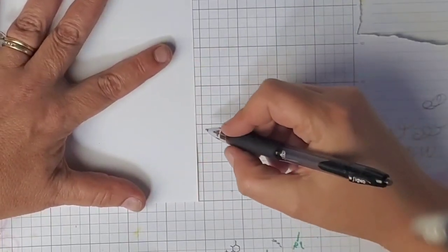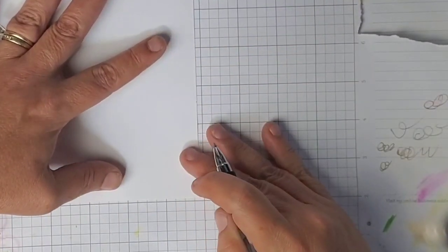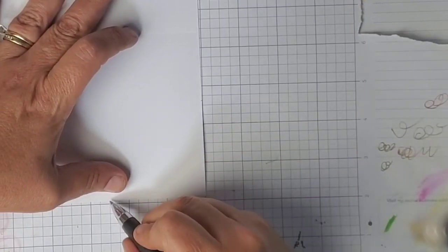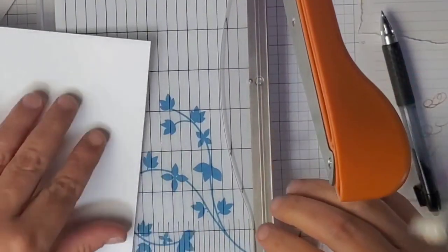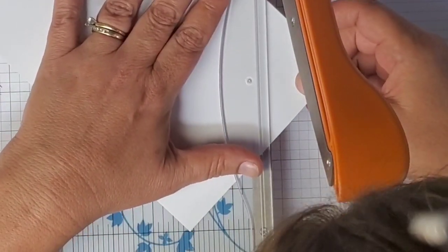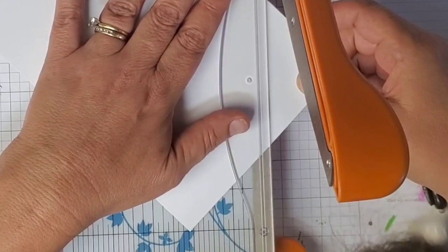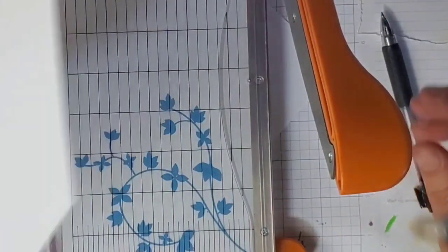So I'm going to go two and a half up, right about here, two and a half over, right about here. It doesn't have to be exact. I'm just going to take this little trimmer right here, line up those little marks best I can, and just trim that off.